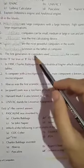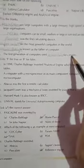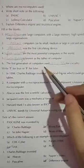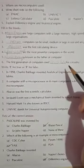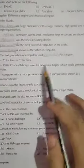The first generation of computers used dash for circuitry. First generation ki computer, circuitry kya use karte the? Vacuum tubes. Then, true and false.